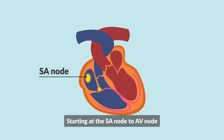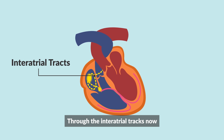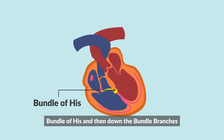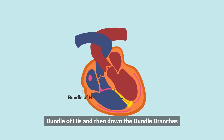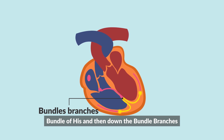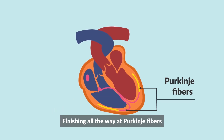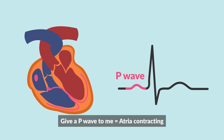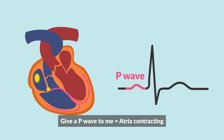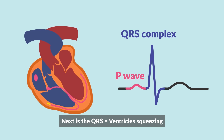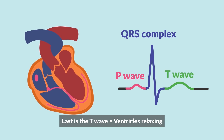Starting at the SA node, to the AV node, through the intra-atrial tracts now, Bundle of His and then down the bundle branches, finishing all the way to the Purkinje fibers. Here baby, wave to the EKG — contracting. Next is the QRS, ventricles squeezing.